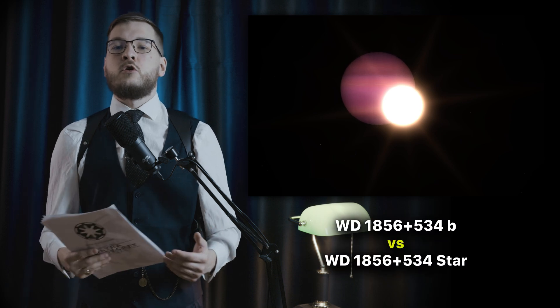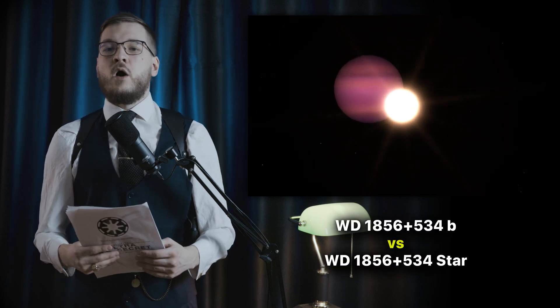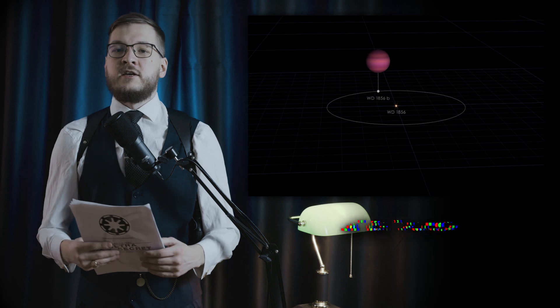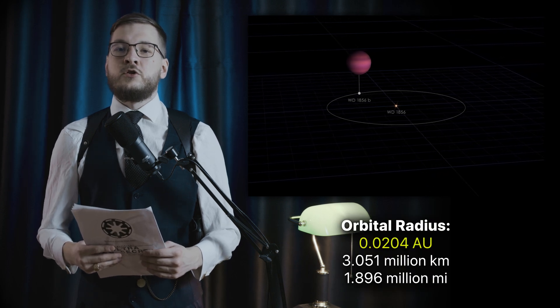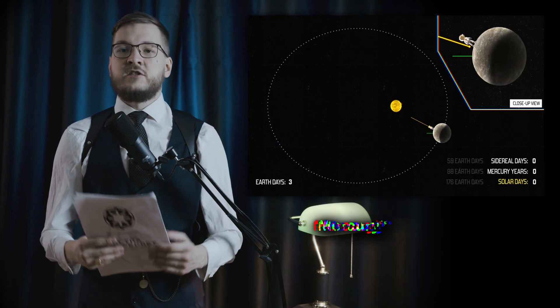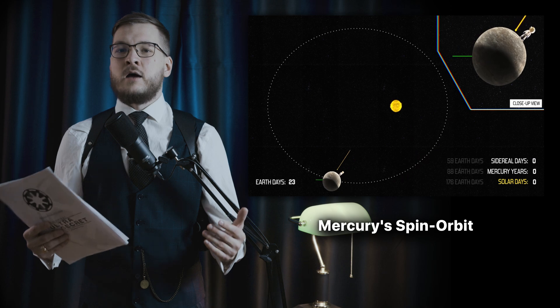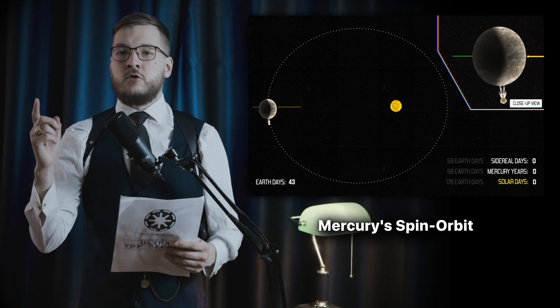This frigid world orbits its host star, a white dwarf, every 34 hours, at a distance of 0.02 AU. That's an orbital period 60 times shorter than Mercury's around the Sun.